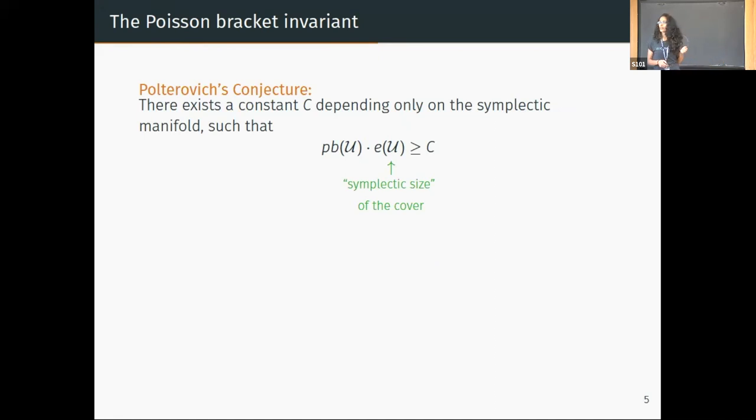A word about what the symplectic size is: we consider a set to be of small symplectic size if it can be disjointed from itself by a Hamiltonian flow. The size of the set is the smallest norm of a Hamiltonian whose flow disjoints it in time one. The norm is Hofer's norm, obtained by integrating over time the oscillation over the phase space.